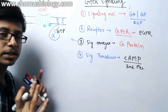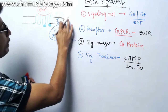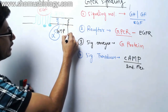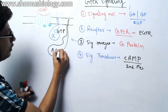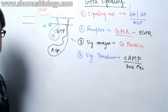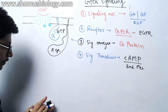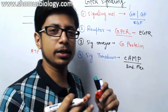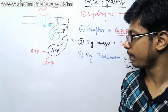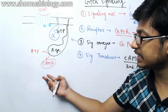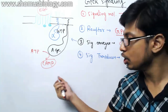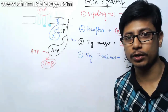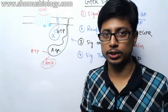The active alpha subunit of G protein further activates a membrane-bound enzyme known as adenylyl cyclase. Once adenylyl cyclase is activated by the alpha subunit, it converts ATP into cyclic AMP through a crosslinking of the phosphate groups. Once cyclic AMP is produced inside the cell, it acts as the first response molecule inside the cell — acting as the second messenger, while EGF is the primary or first messenger.